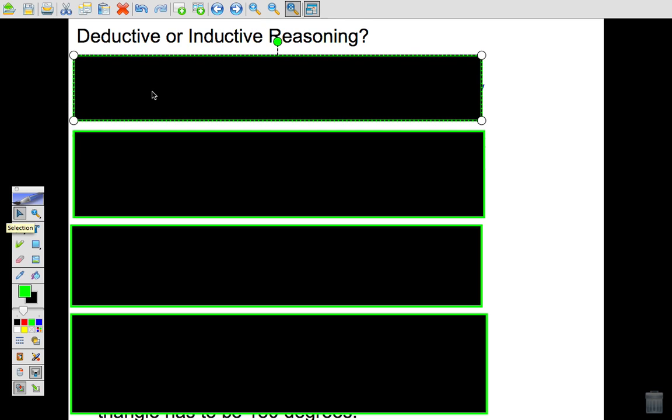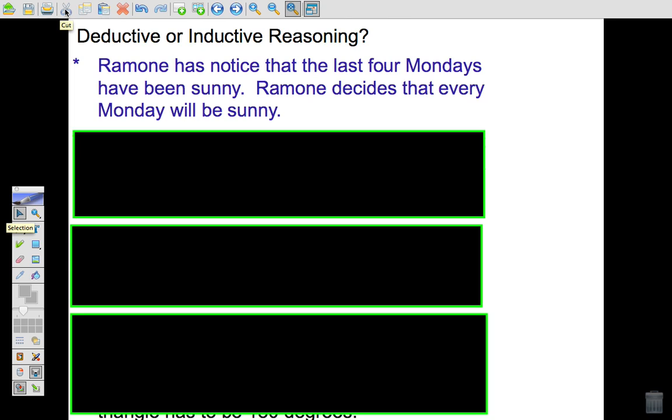I've got some examples. Let's take a look at the first one. It says, Ramon has noticed that the last four Mondays have been sunny. So in other words, the last four Mondays have been sunny. Ramon decides that every Monday will be sunny. Now, what we want to write down or decide here, is this deductive? Is Ramon thinking deductively or is he thinking inductively?